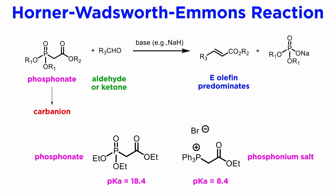For one thing, phosphonium salts are much more acidic than the corresponding phosphonates, in part because they are positively charged, and proton loss leads to a neutral species, an ylid. As a consequence, phosphonate anions are more basic than the corresponding phosphorus ylids, and also more nucleophilic.